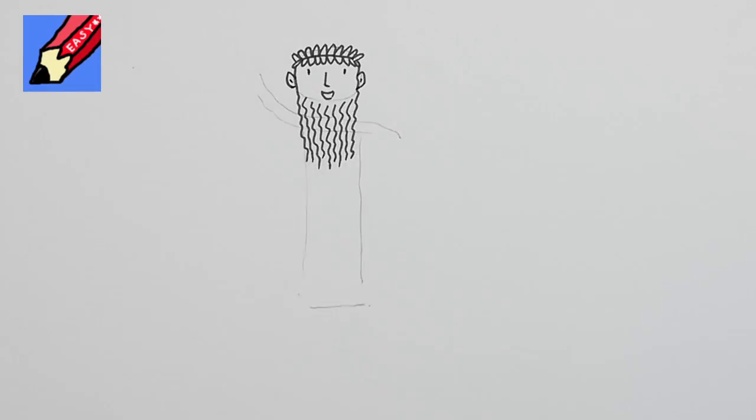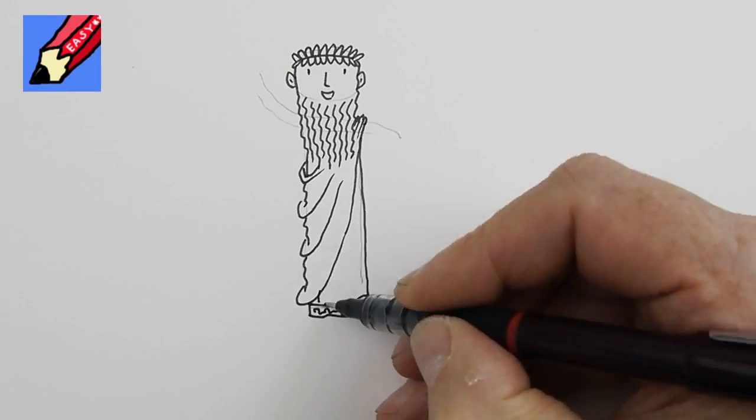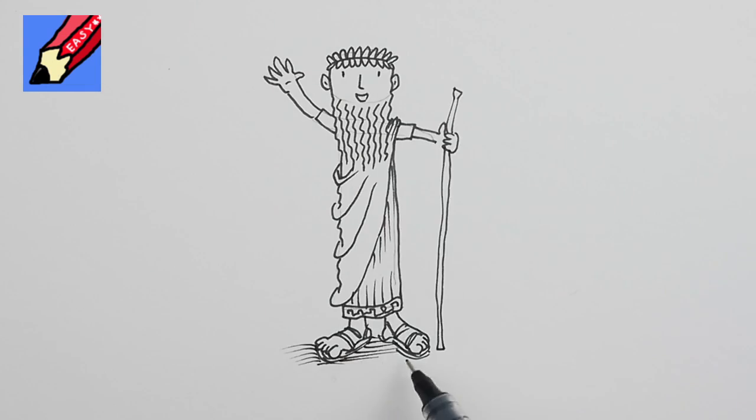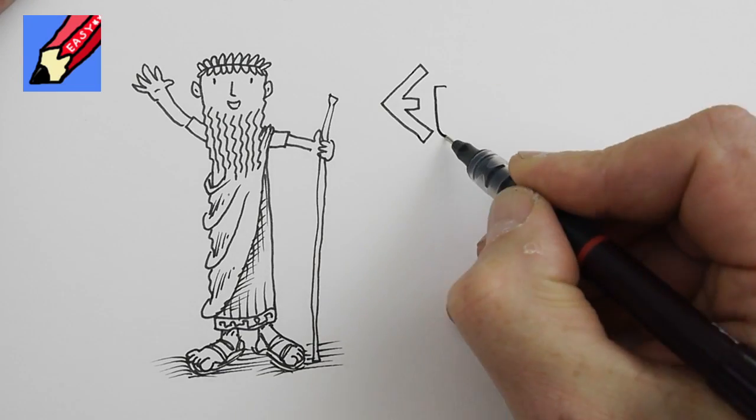A long, long, long time ago, about 2,300 years ago to be a little more precise, there lived a man in ancient Greece called Euclid.